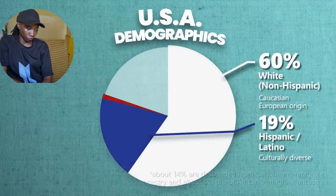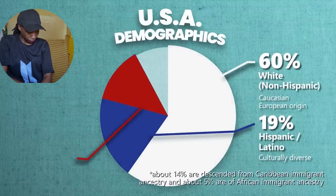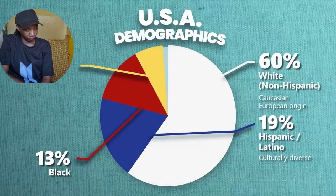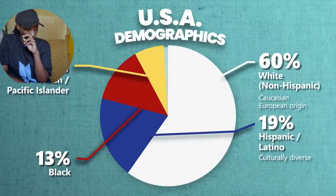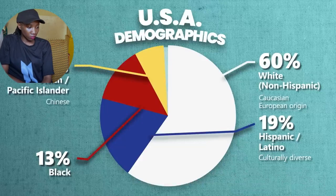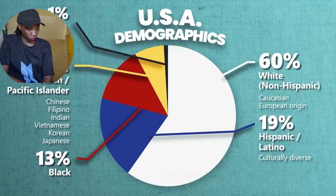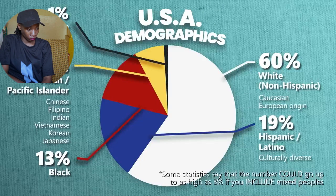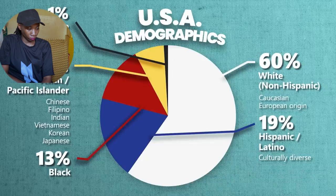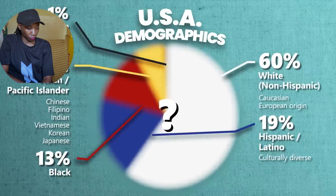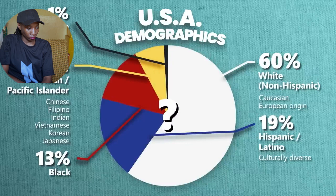The Latino and Hispanic communities are also incredibly diverse within themselves. The Black community makes up the third largest demographic at around 13% of the population. Asians and Pacific Islanders make up about 7%, the largest communities being Chinese, Filipino, Indian, Vietnamese, Korean, and Japanese. The remaining 1% is mostly Native American or Hawaiian/Alaskan natives. We use the U.S. dollar, type A and B plug outlets, and drive on the right side of the road.